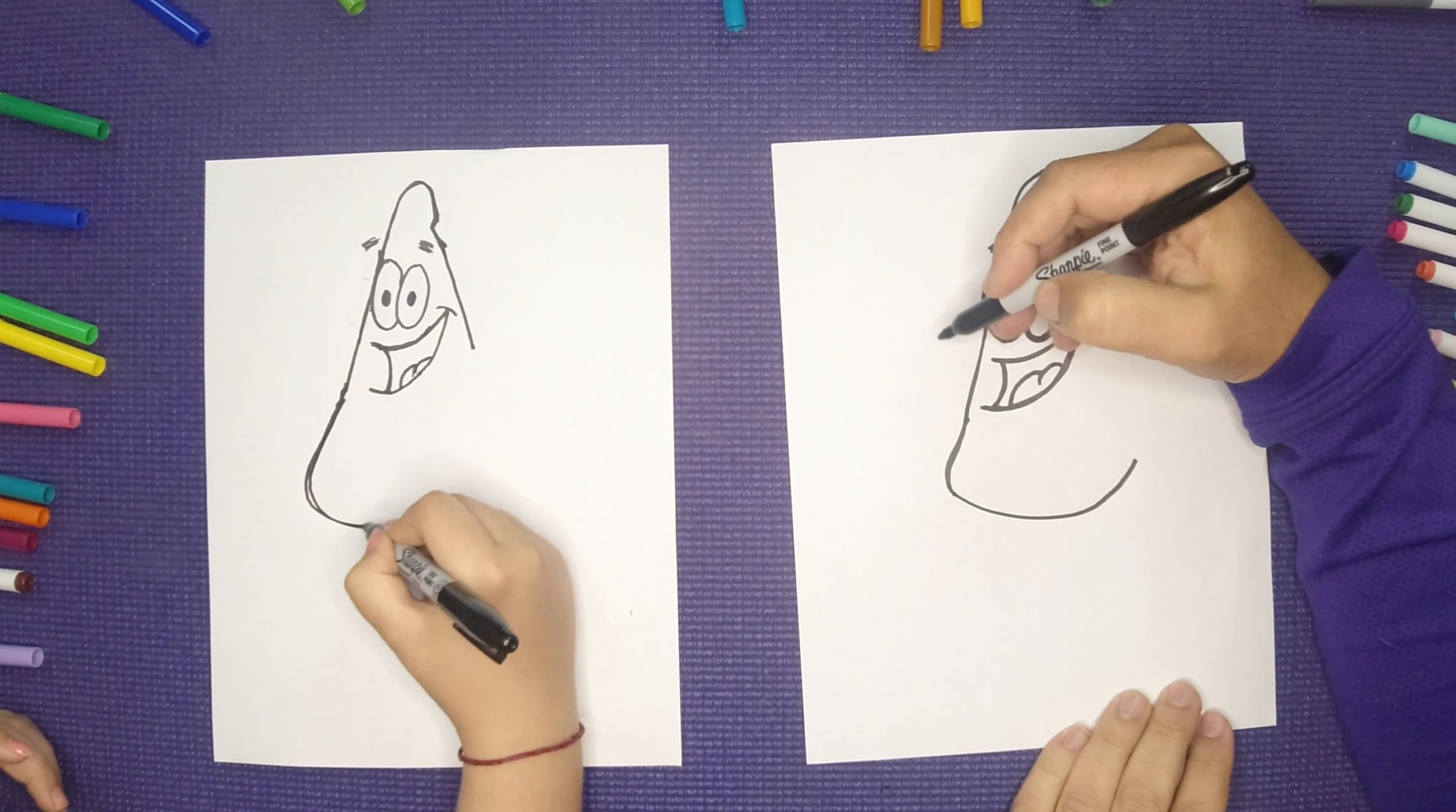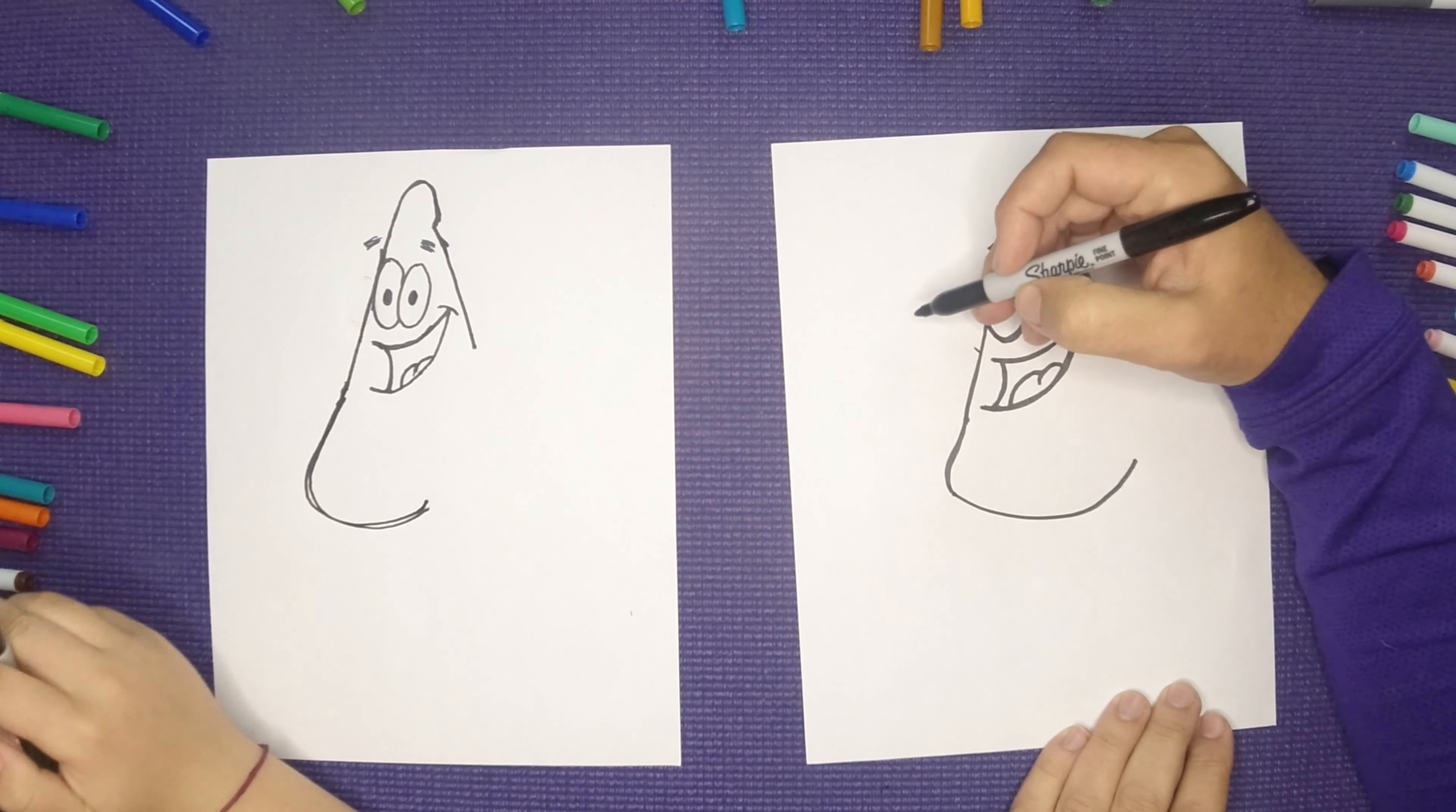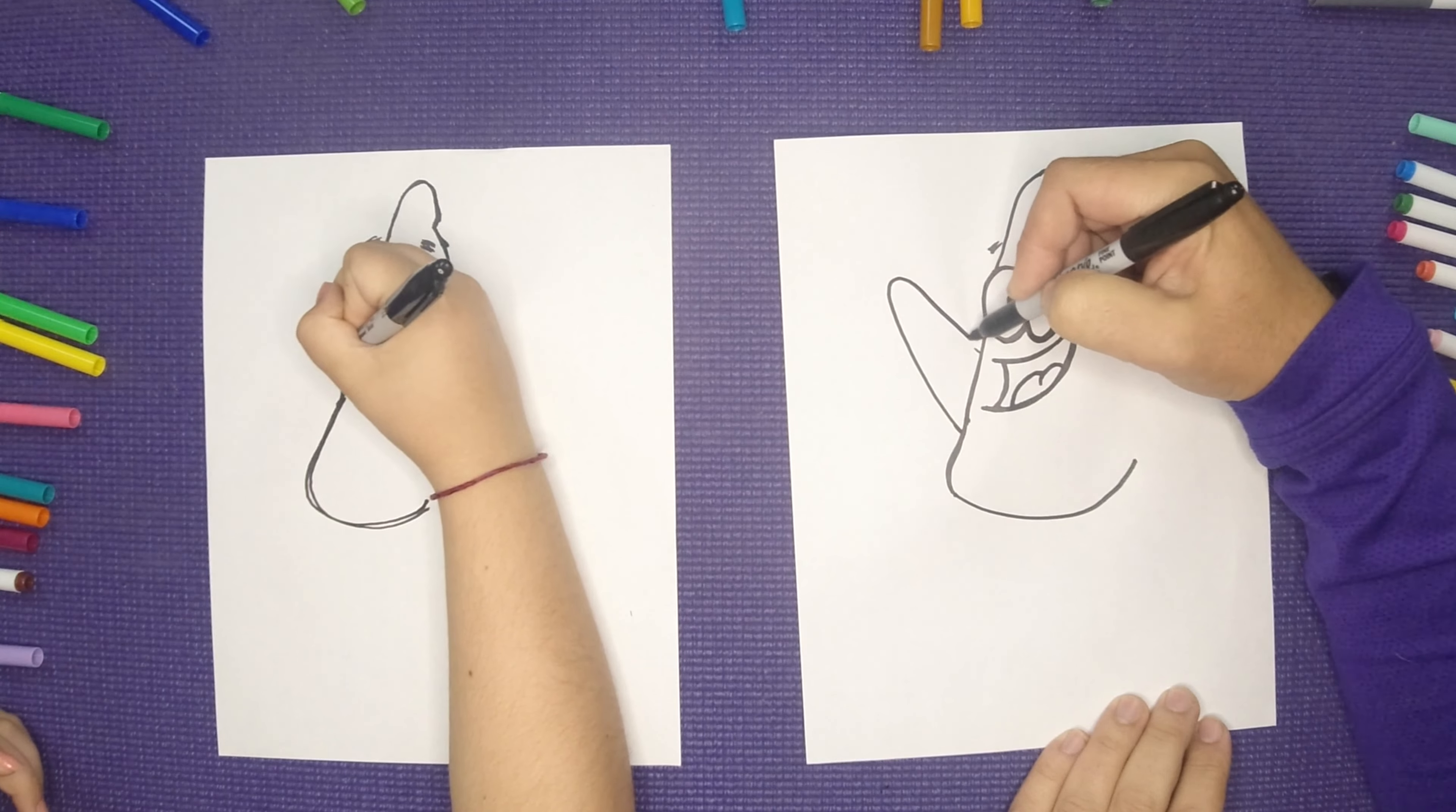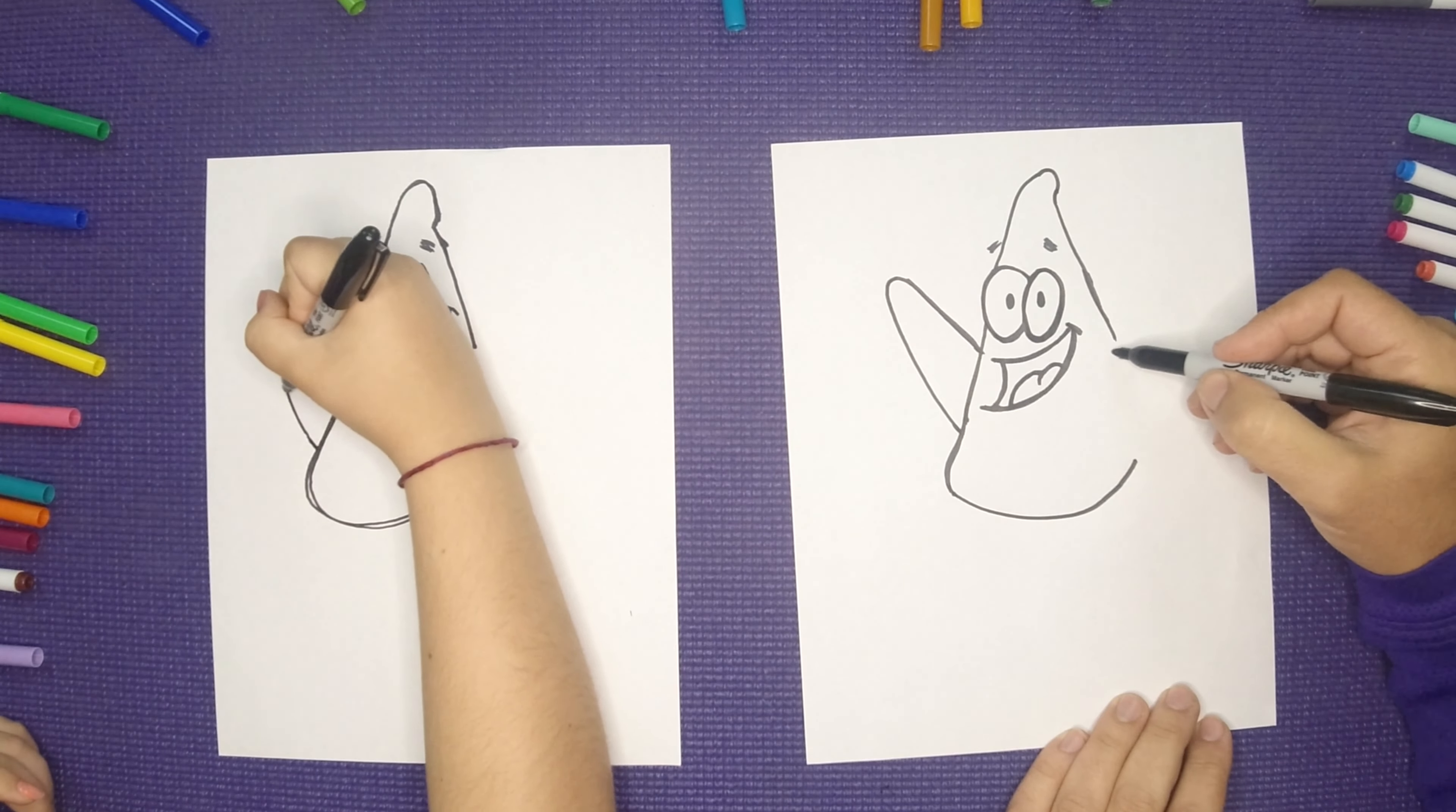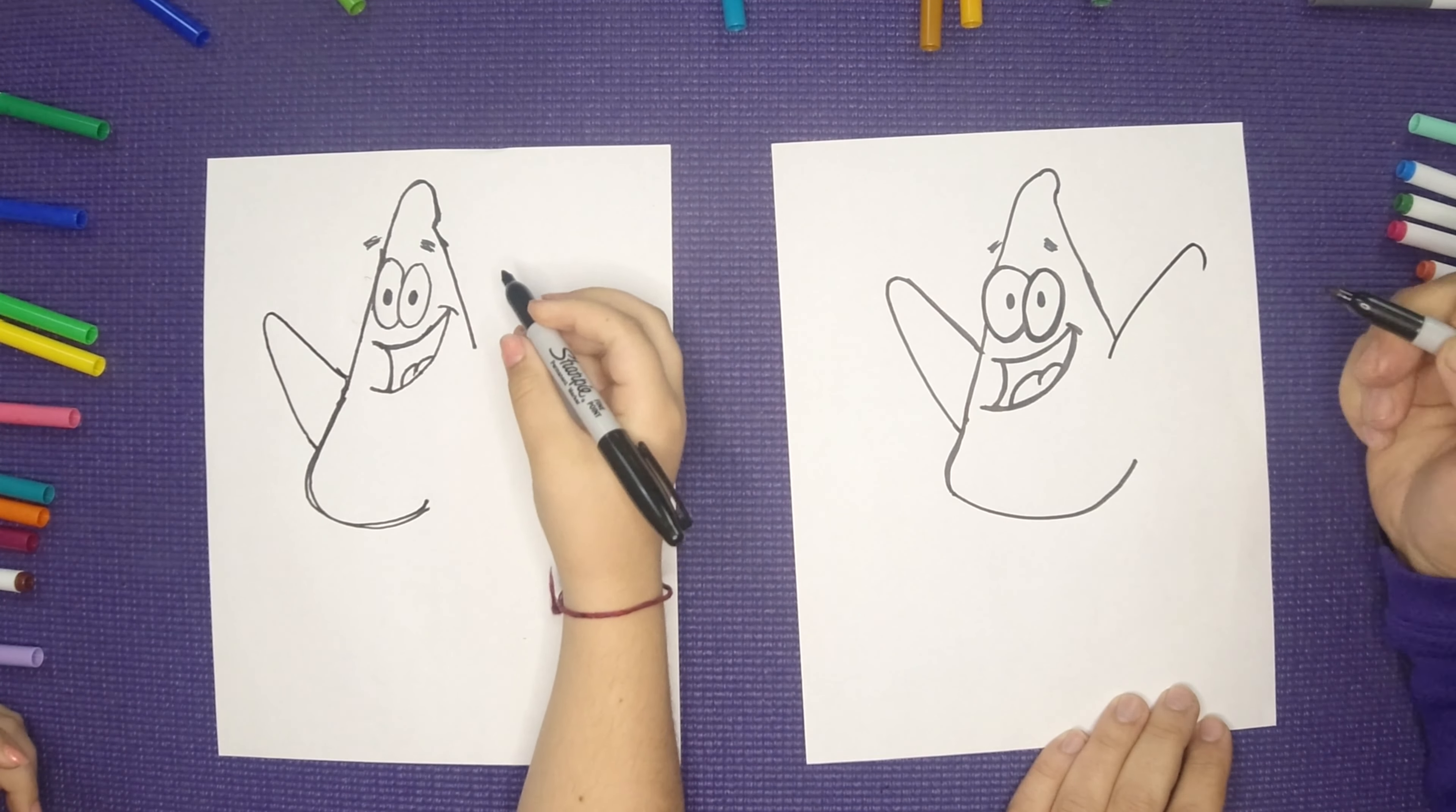Alright, he's got an arm coming out right about there. He's a starfish, is that what he is? Alright, we got our arm in the front on this side.